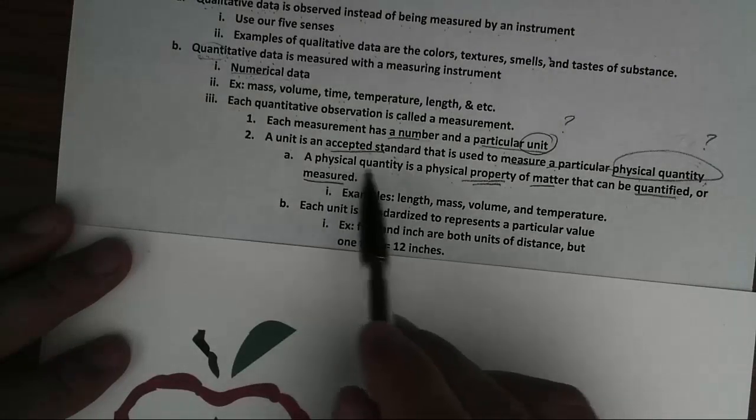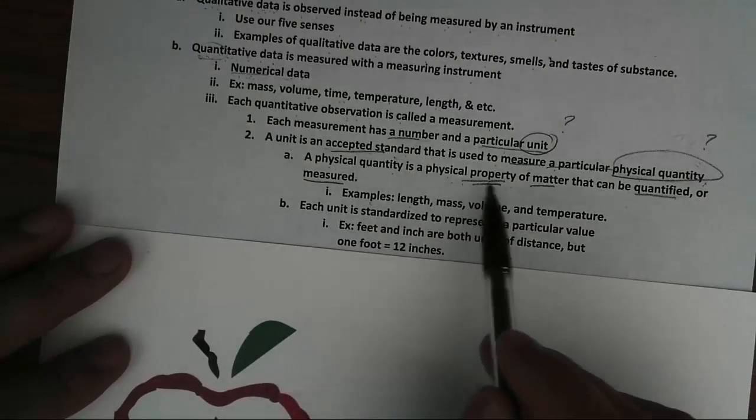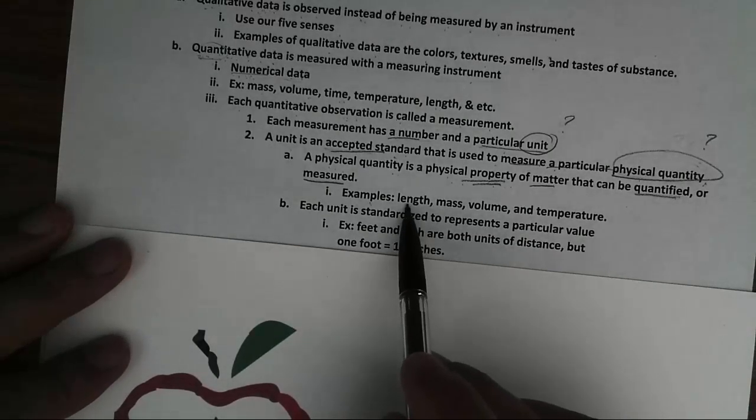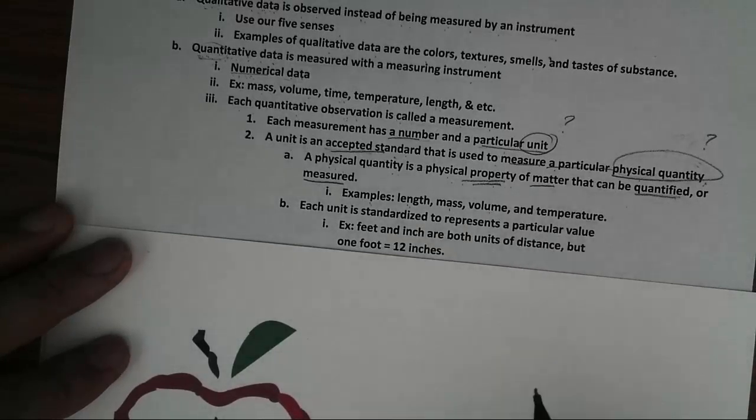Examples of physical quantity or physical property that can be quantified or measured are length, mass, volume, and temperature of the substance.